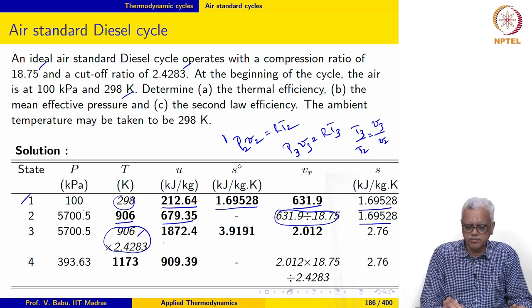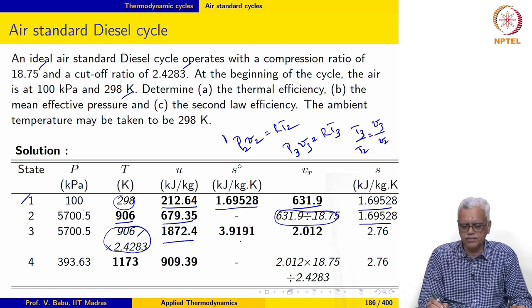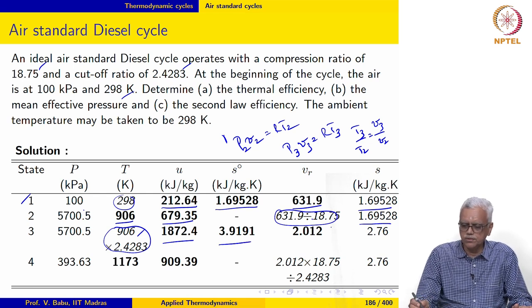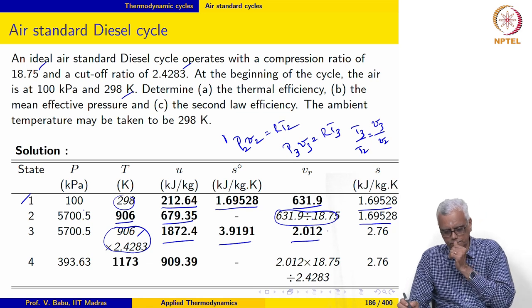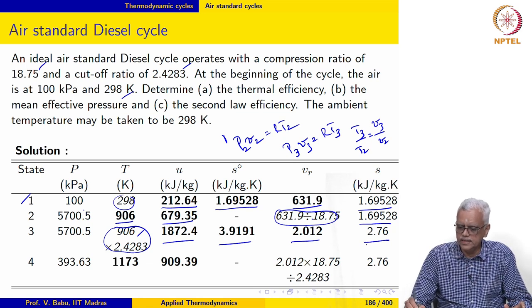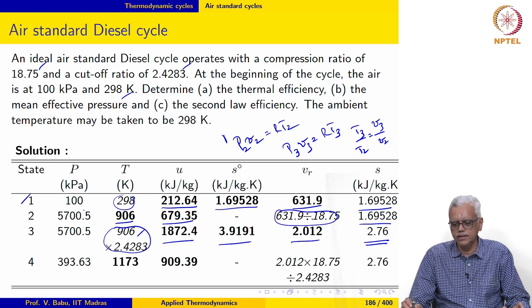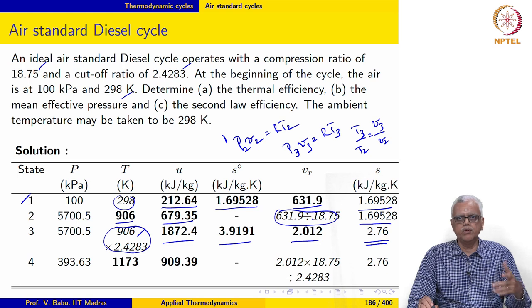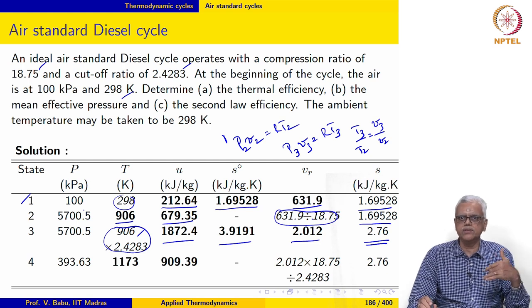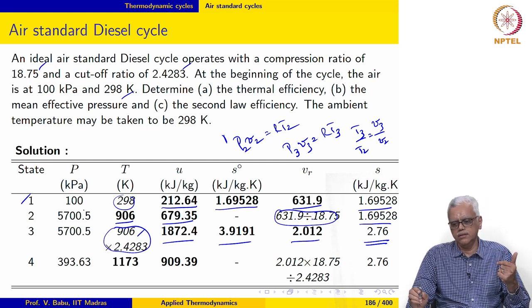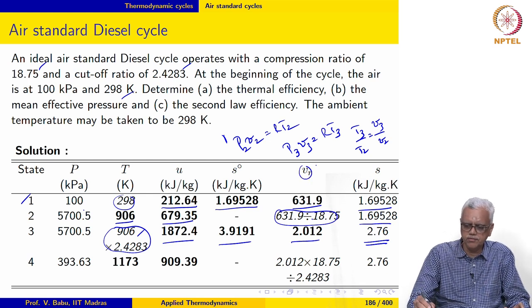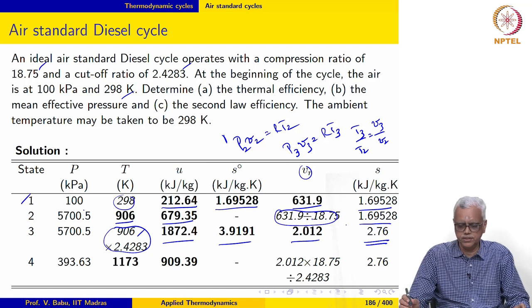With this value of temperature, we go into the air table and retrieve U, S0 and Vr. S here has to be evaluated using our expression S of T comma P equal to S0 of T minus R times, here we can use an expression that involves V. It can be calculated using the TDS relationship.